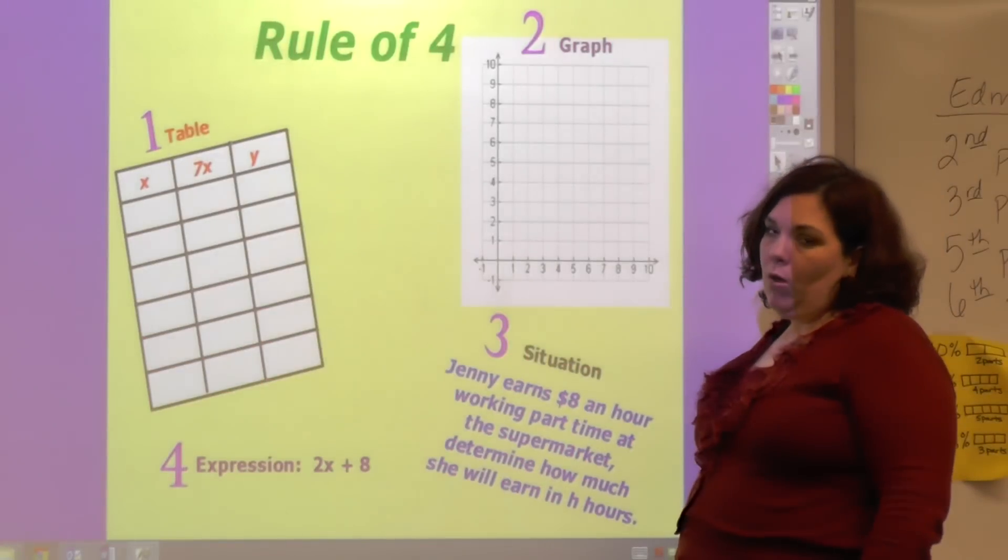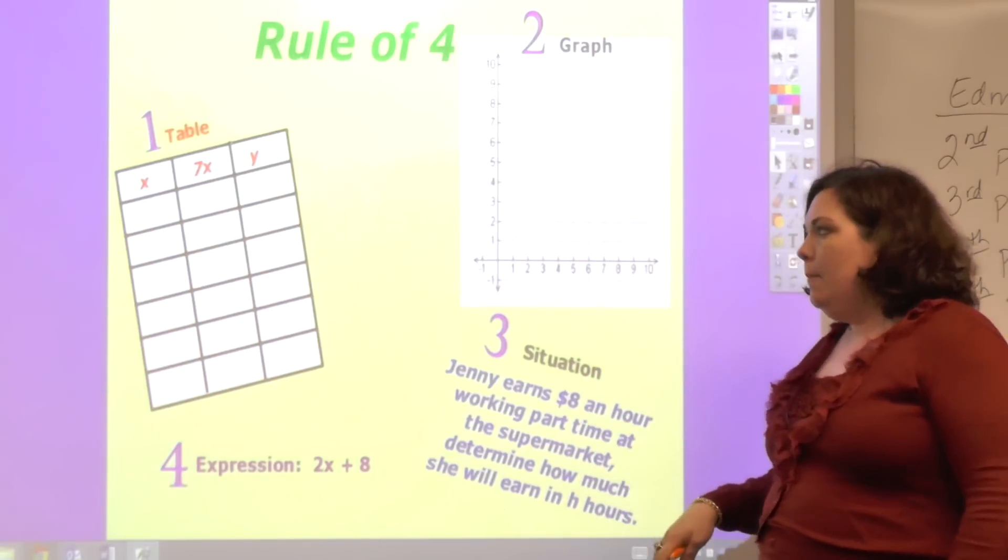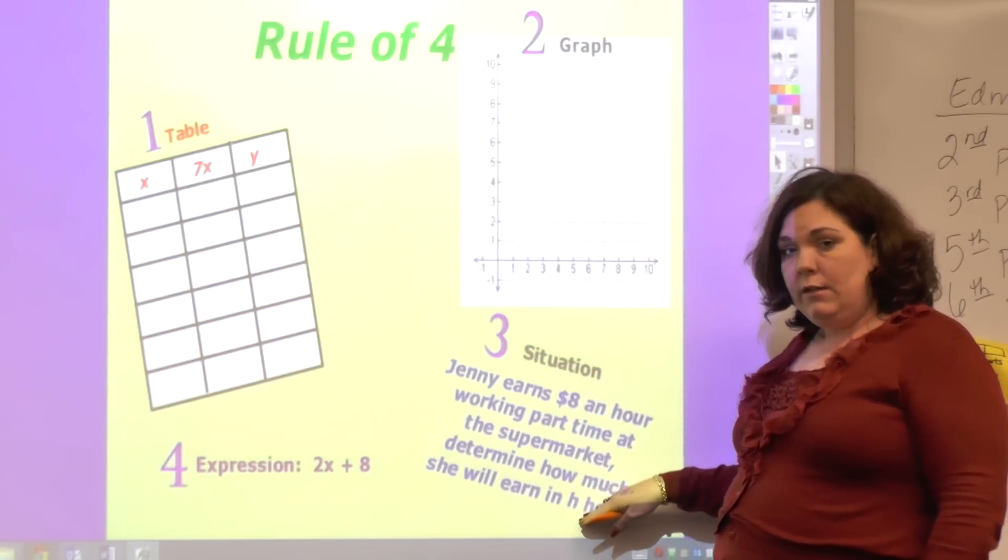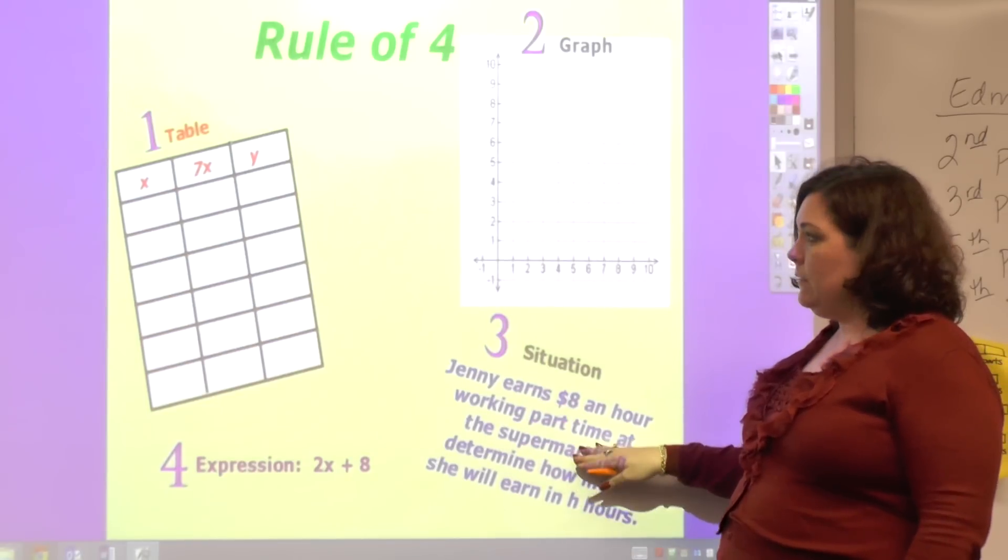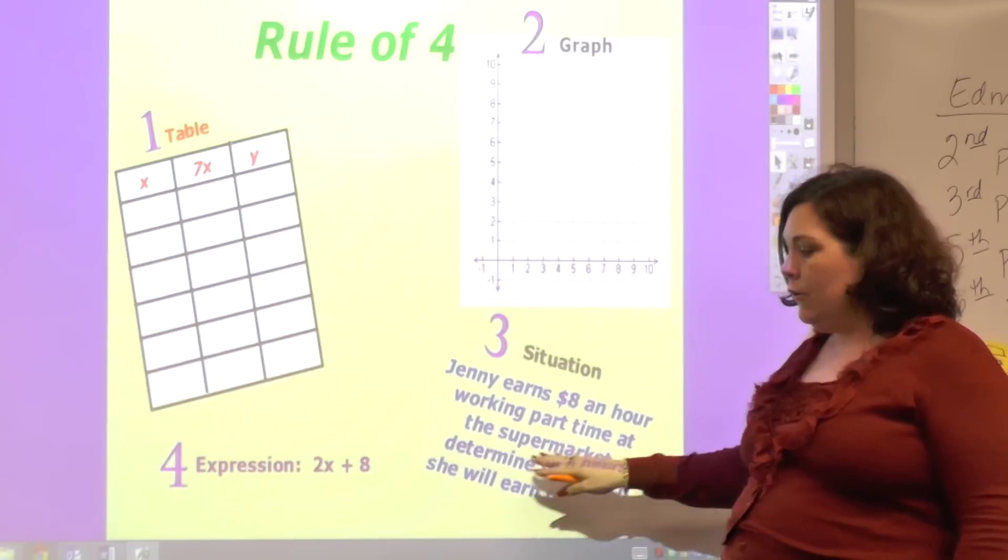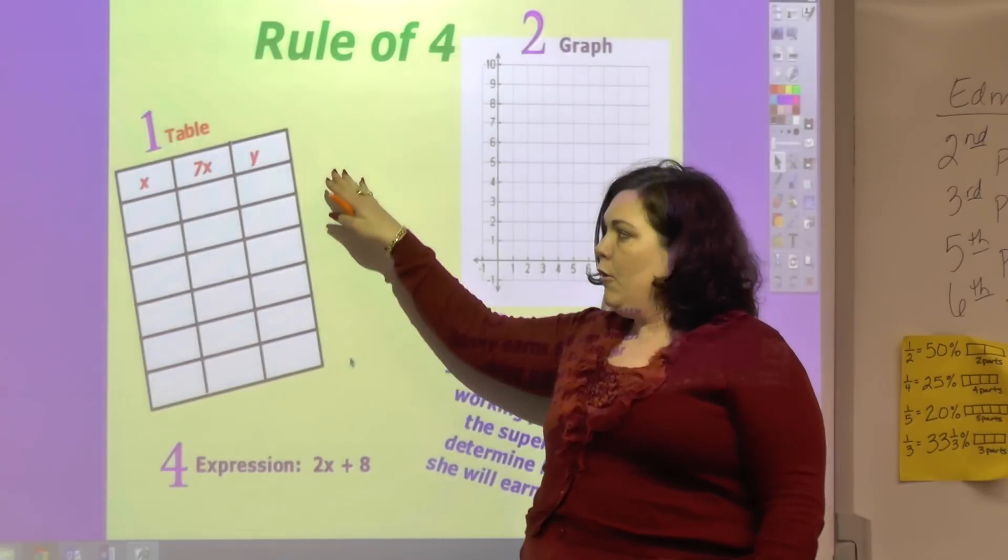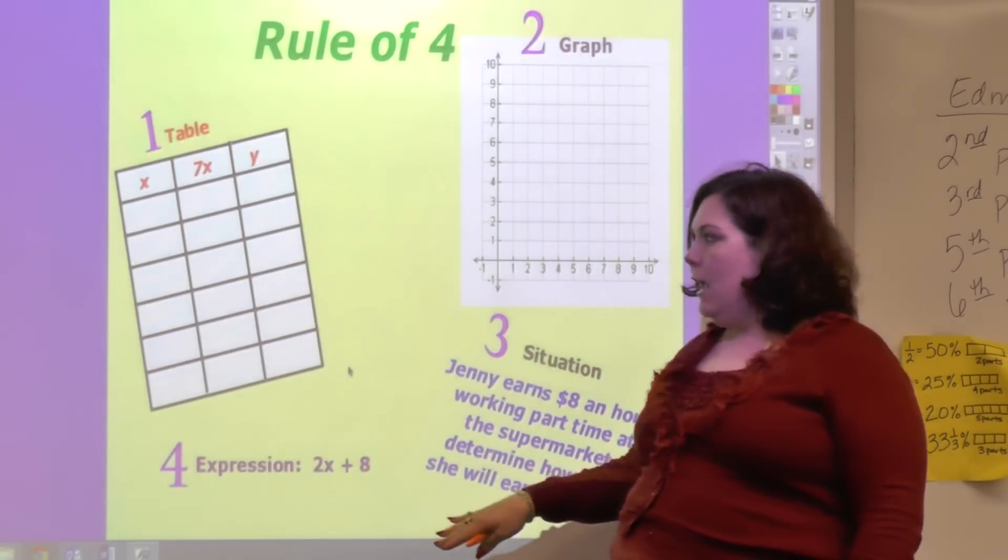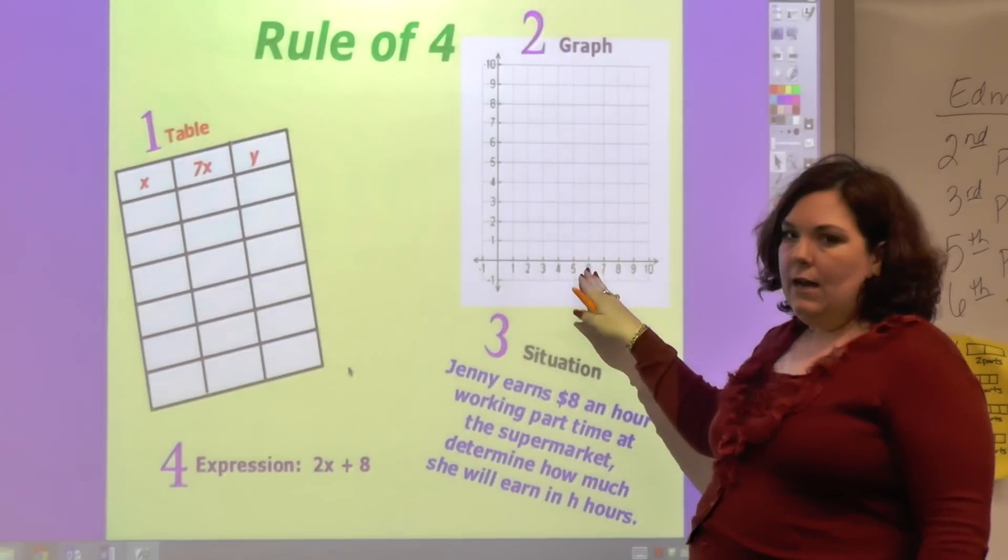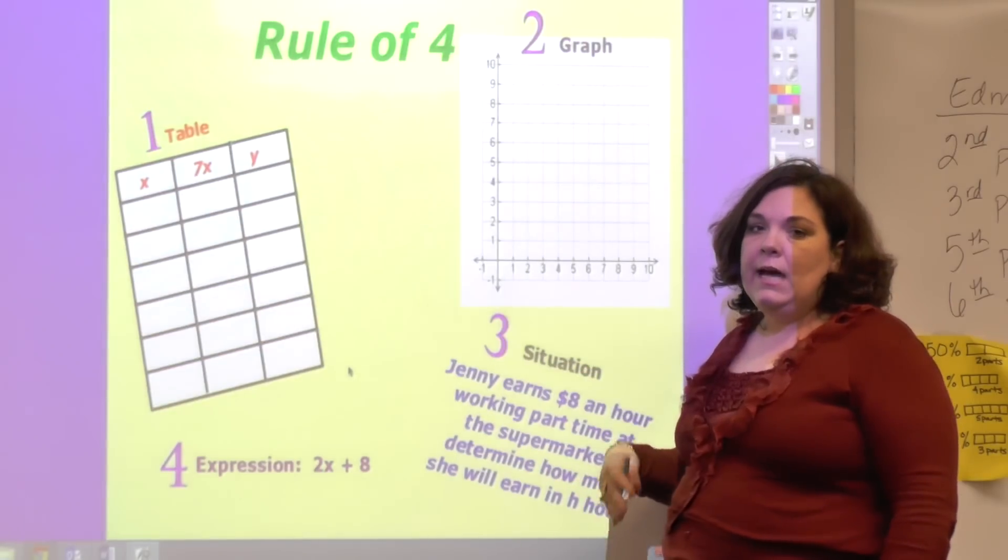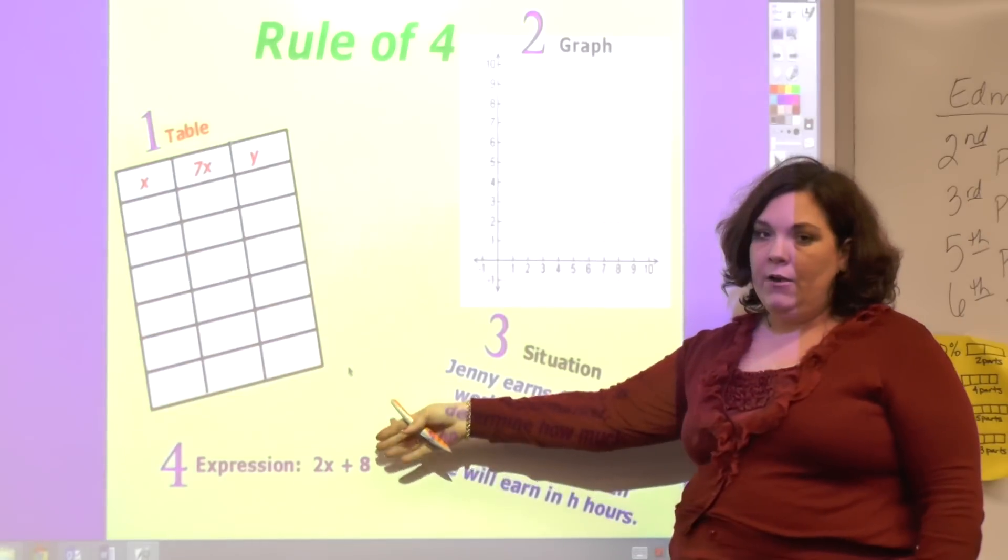This video is on rule of four. These are numbered one, two, three, four. Usually you're given a situation, and from the situation, which is just words, just a couple of sentences, you can either write a rule or create a table. Once you have the table with the X and the Y, you can graph it. We're going to look at different situations and the way you would create a table, create a graph, and find a rule for them.